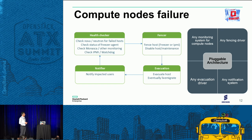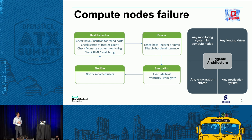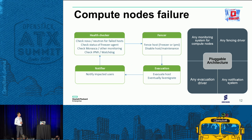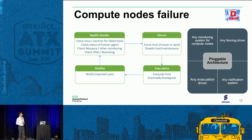The first approach is compute node failure. The Freezer architecture, with some modularization of the code for additional features, allows us to address the workflow and functionality needed to implement automatic failover of compute nodes. We leverage what OpenStack provides as much as possible, starting with a health checker that polls the Nova APIs, fetches the status of the hypervisor, and detects which ones are marked as down.